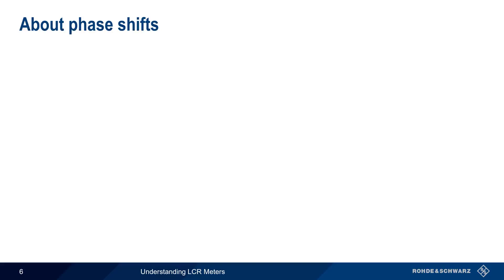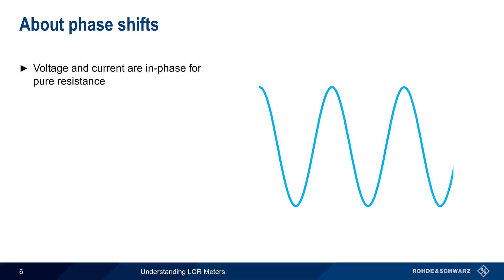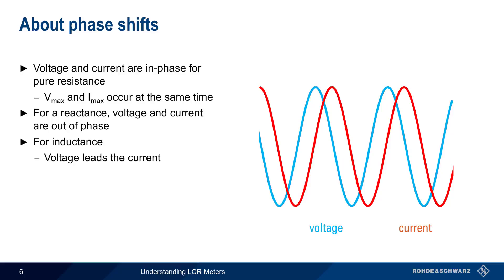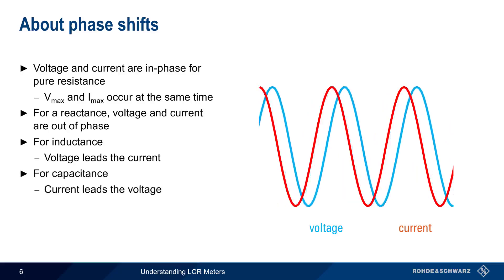Another way to calculate a complex impedance is using the phase shift between voltage and current. As you should already know, voltage and current are in phase for pure resistances. That is, the maximum voltage and maximum current both occur at the same time. A reactance, on the other hand, causes the voltage and current to be out of phase. In the case of inductance, the voltage leads the current. And in the case of capacitance, the current leads the voltage.